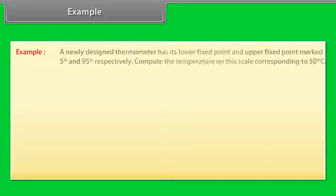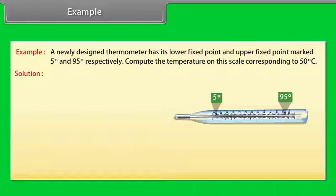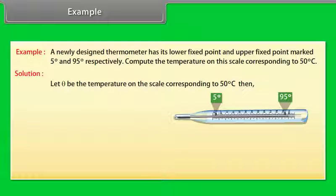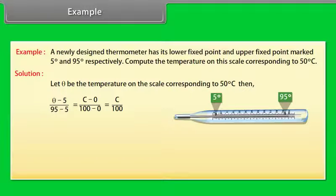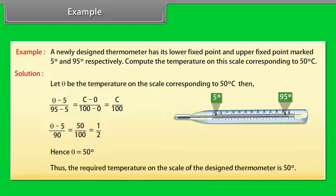Example: A newly designed thermometer has its lower fixed point and upper fixed point marked at 5° and 95° respectively. Compute the temperature on this scale corresponding to 50°C. Let θ be the temperature on the scale. Then (θ − 5)/(95 − 5) = C/100, giving (θ − 5)/90 = 50/100. Hence θ = 50°. The required temperature on the scale of the designed thermometer is 50°.